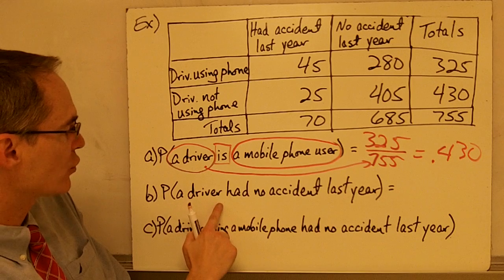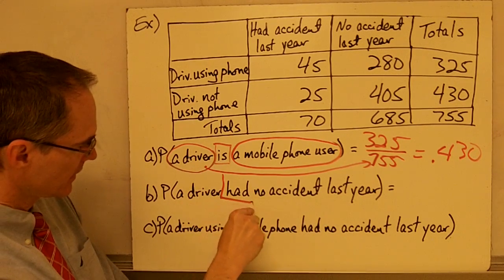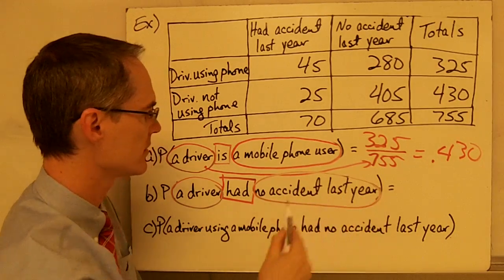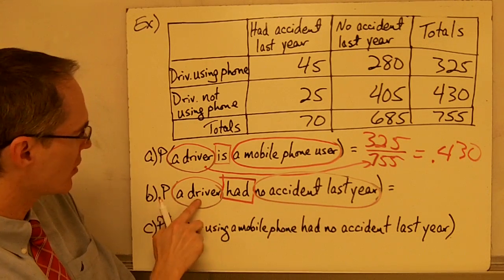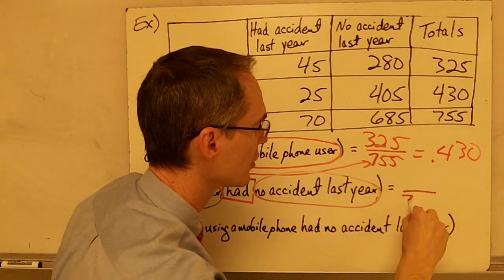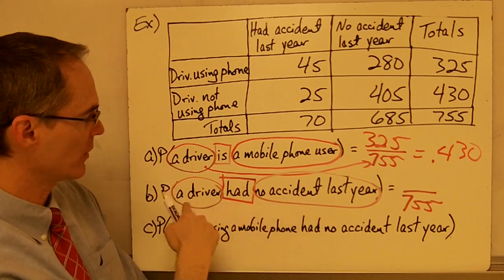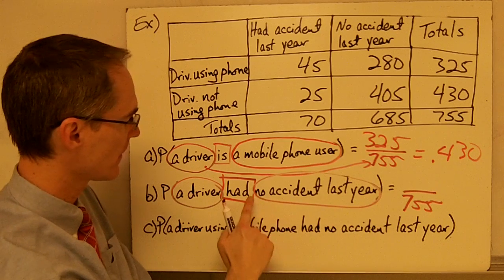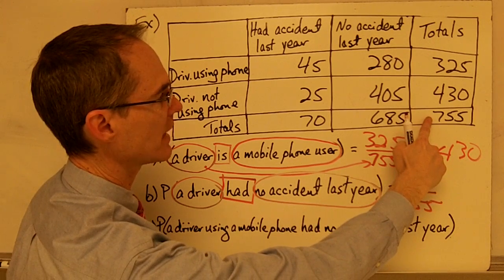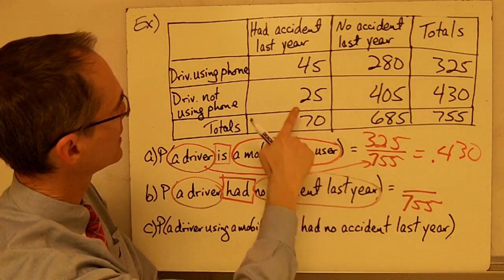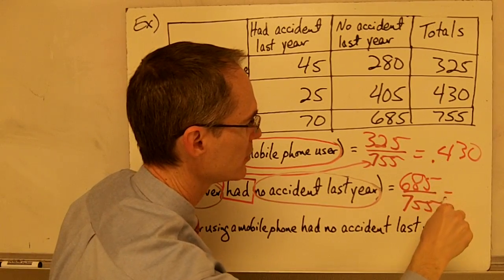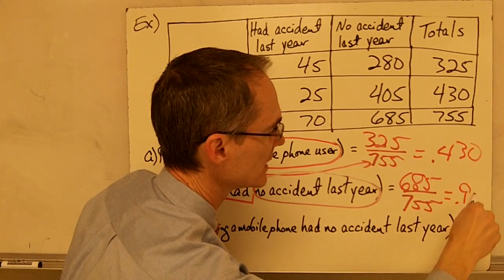The probability that a driver had no accident last year: again the verb divides the statement into two pieces. The total number of drivers in the study is 755 — that's my denominator. Of those, 70 had an accident and 685 did not have an accident. So my numerator is 685, and 685 divided by 755 is .907.